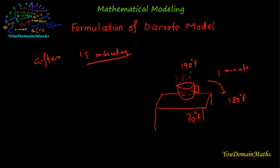Firstly, we will find a relation between the present temperature, that means current temperature, and the room temperature. We will use Newton's Law of Cooling. This states that the rate of change of temperature of an object is proportional to the difference between the room temperature and its own temperature.